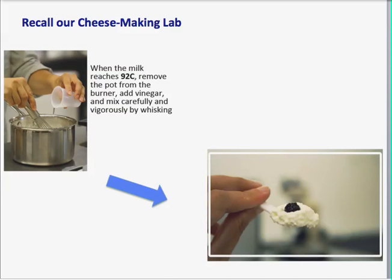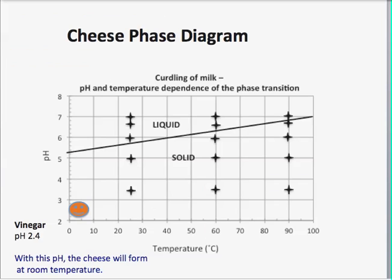This was the first lab of the year in which you made cheese. And you'll remember that you made it by heating up milk and then adding vinegar, adding an acid, and that caused the cheese to coagulate.